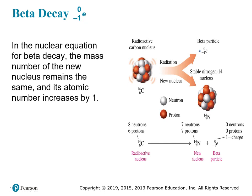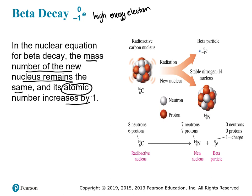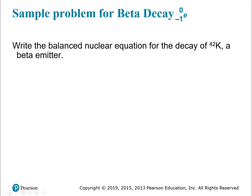Let's do an example for beta decay — a high-energy electron. When you emit that high-energy electron, your mass number stays the same but your atomic number increases by one. Write the balanced nuclear equation for the decay of potassium-42, a beta emitter. Potassium has radioactive isotopes — and yes, there is radioactive potassium in bananas, which is totally fine. You're not going to die; you can still eat bananas.